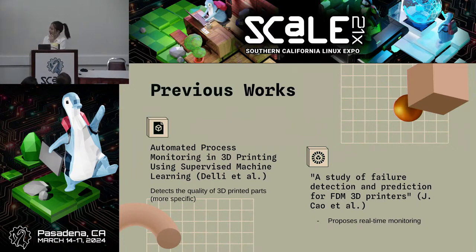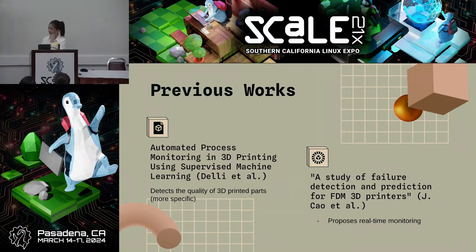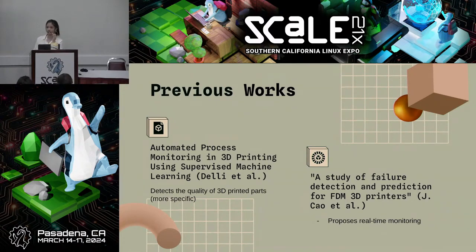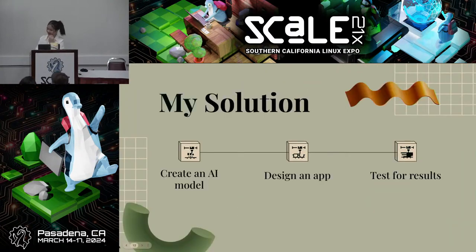The second study is 'A Study of Failure Detection and Prediction for FDM 3D Printers.' It uses real-time monitoring of the 3D printing process and machine learning, but the algorithm has limitations — it doesn't detect certain types of failures. For example, warping, which is when the filament on the print bed shrinks and warps the 3D print, is not detected.